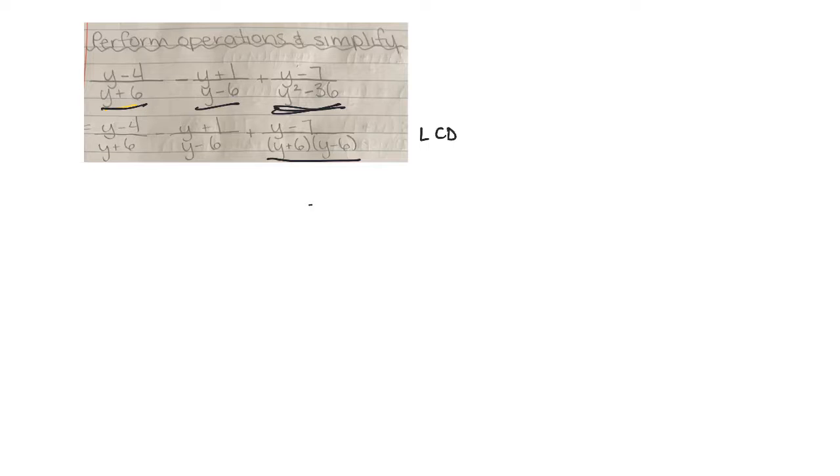Now figure out your lowest common denominator. In this case, we need to include every factor the most number of times it occurs in any one factorization. So I have a y plus 6, I need one of those. And there's one here and one there, so I just need one. And then I also need a y minus 6. There's one there and one there, so I just need one. So this is my common denominator.